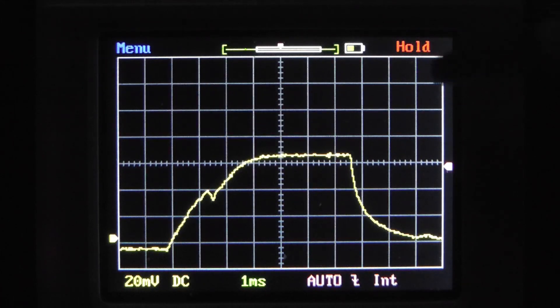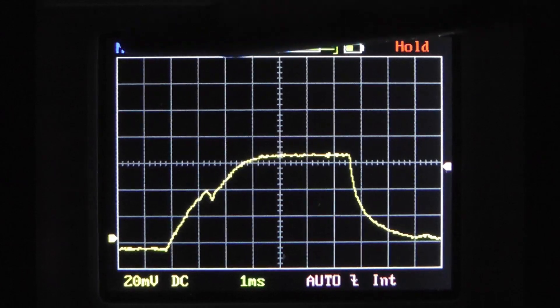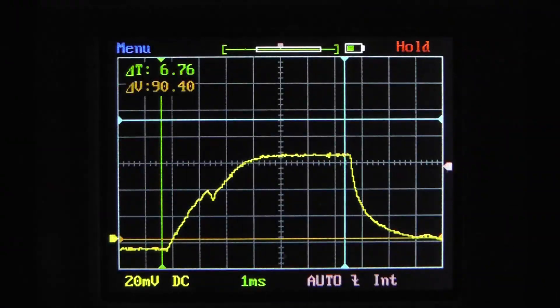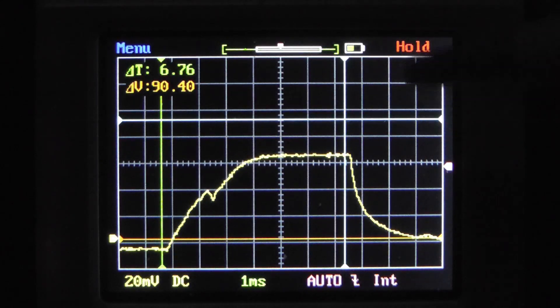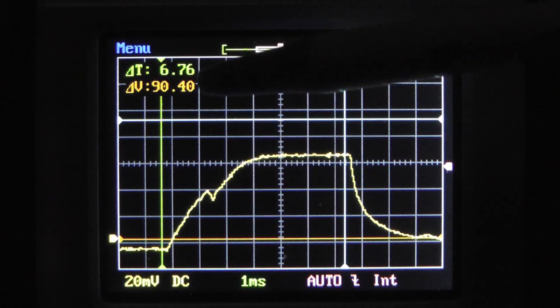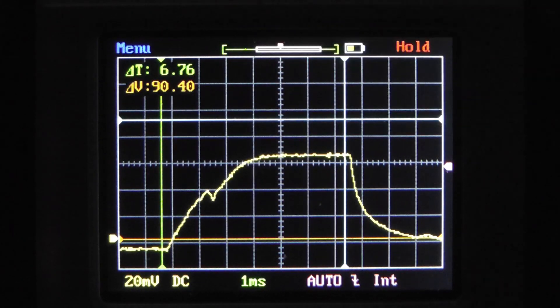So, some of the cool features are, of course, I just showed you the hold. This thing also has horizontal and vertical cursors, and they will operate simultaneously, so I can display the delta time and the delta voltage to get a reading that way.